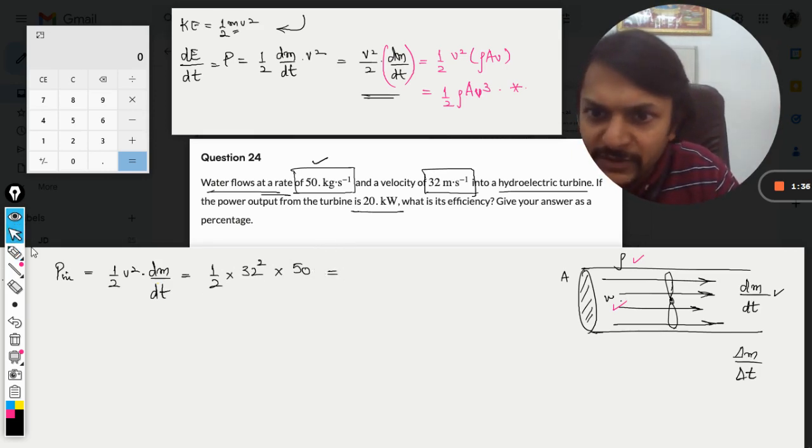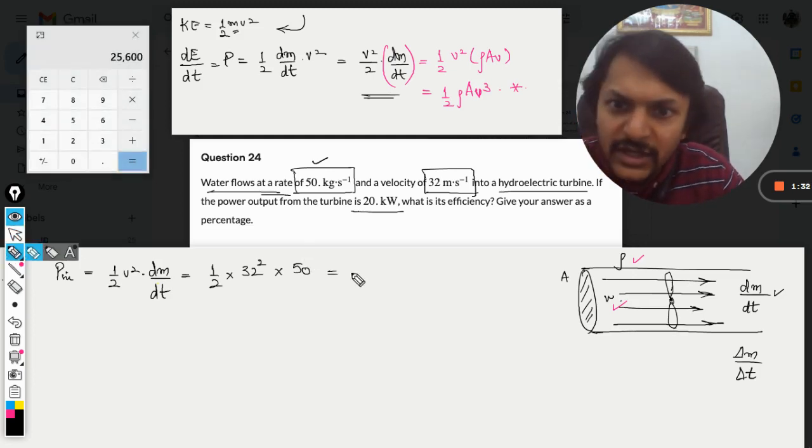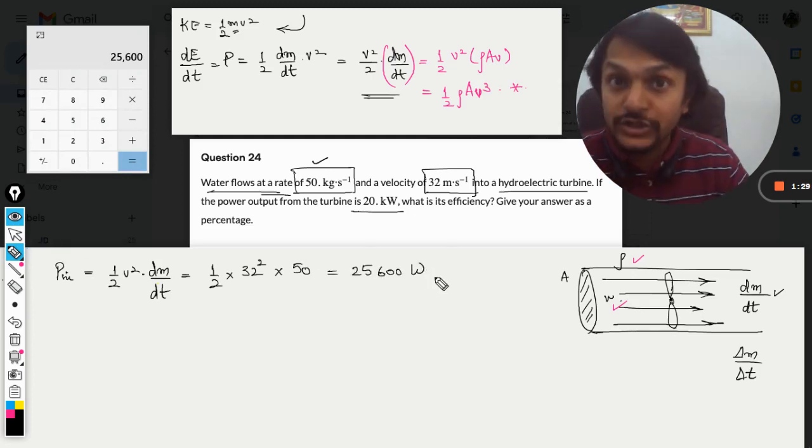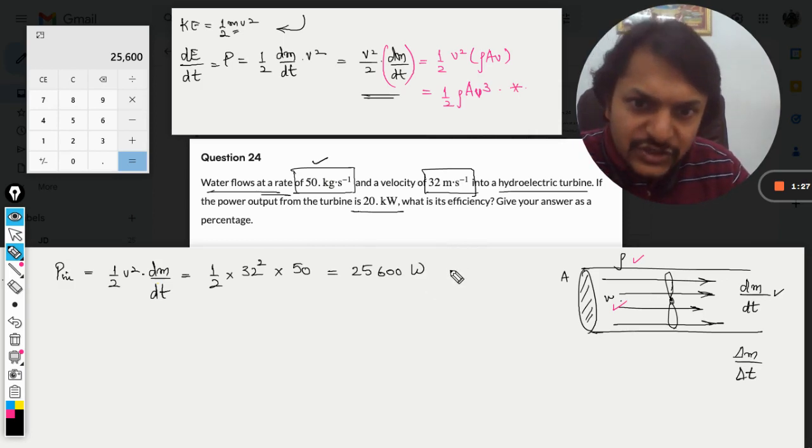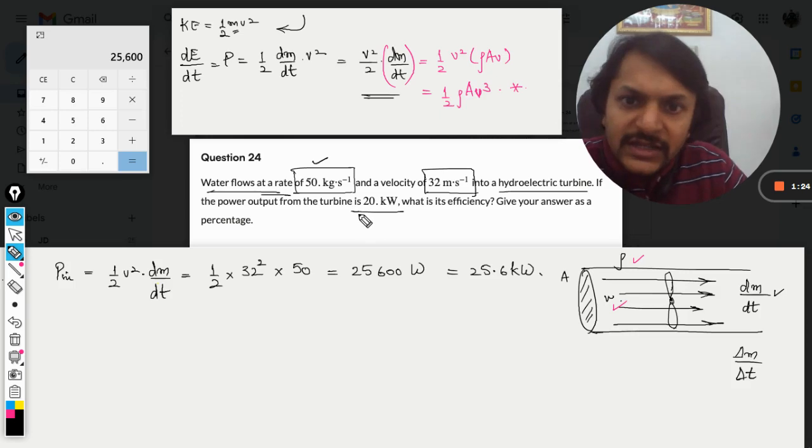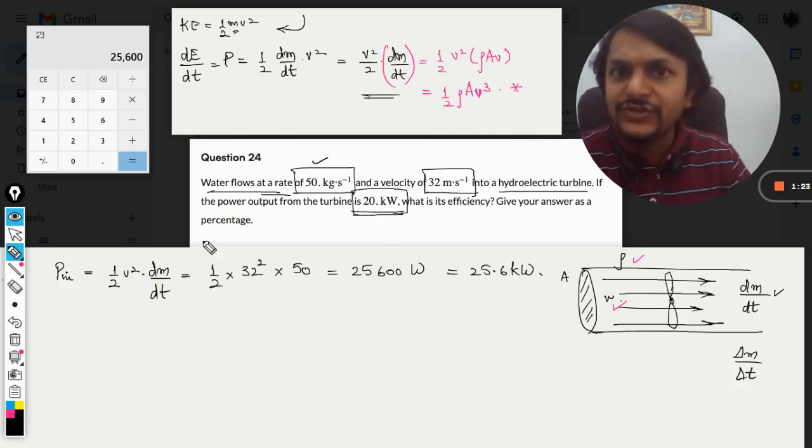This has to be calculated: 32 times 32 divided by 2 times 50. That is coming out to be 25,600 watts. We can call it 25.6 kilowatts. The power output, as given in the question, is 20 kilowatts.